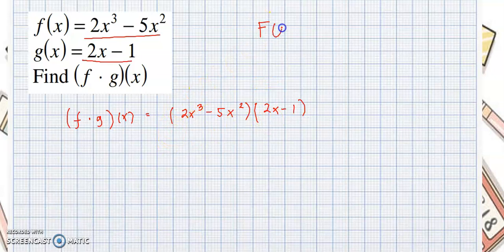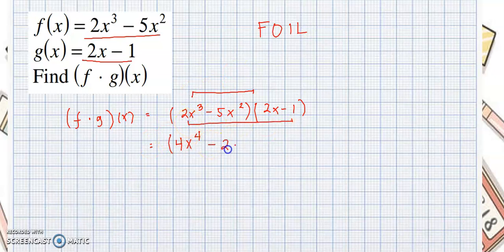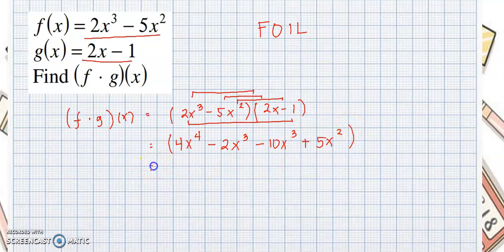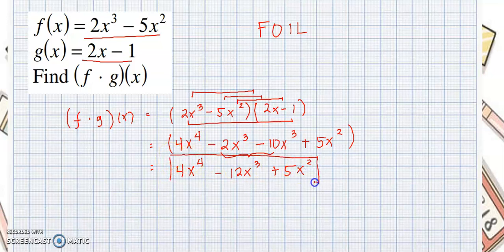Since these are two binomials, we can use the FOIL method. The first term would be 4x to the 4th. The outside term would be negative 2x cubed. The inside term is negative 5x squared times 2x, that's negative 10x cubed. Then negative 5x squared times negative 1 is positive 5x squared. Combining similar terms: 4x to the 4th, negative 12x cubed, plus 5x squared. So this is the answer for f times g of x.